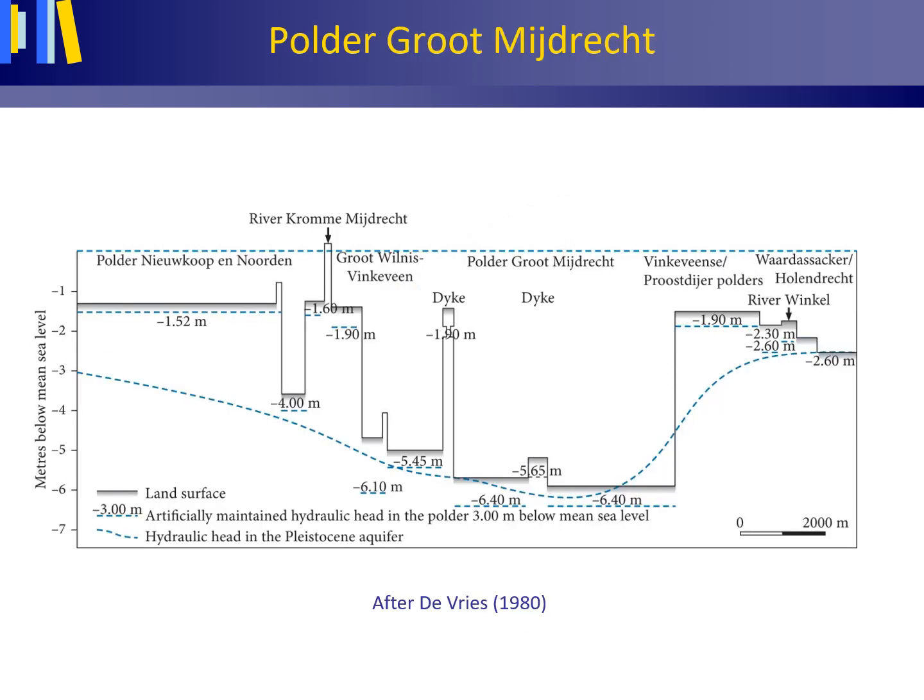This takes us to the situation in the western part of the Netherlands, shown in cross-section here — a figure taken from Professor Ko de Vries' book on the hydrology of the Netherlands — where low-lying polders, made up of horizontal semi-permeable clay and peat layers, lie on top of a horizontal sandy aquifer. Surface water is regularly pumped out of these polders to ensure that connected groundwater levels remain at a near-constant level below the land surface, as shown here.